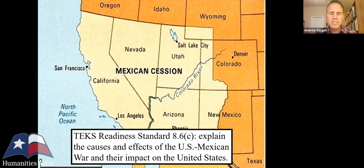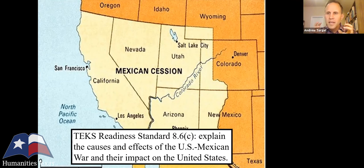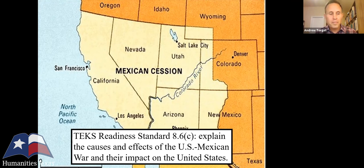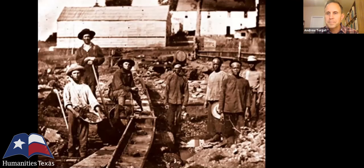TEKS readiness standard 8.6c asks us to explain the causes of the U.S.-Mexico War and their impact. One key effect I want to emphasize is that it forced northerners and southerners to decide: would this western territory be slave or free? Because the Cotton Revolution had reinvigorated the economics of slavery, it also supercharged the politics of slavery, giving these decisions real, lasting, powerful impacts on how northerners and southerners saw their future.